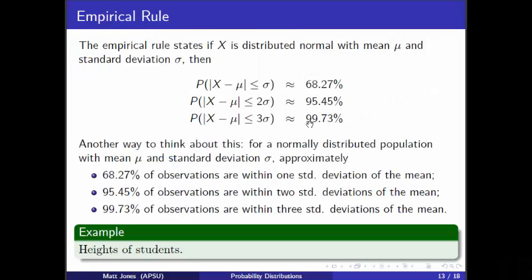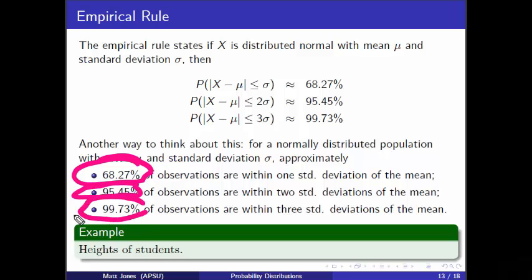If you've got a normal distribution, then about 68.27% of the observations are within one standard deviation. You go out two standard deviations either side of the mean and you collect about 95.45%, and going about three standard deviations out either side gets you almost all of it. This can tell you something about whether a data value might be considered extreme — another way to look at outliers. If something is two and a half, three or more standard deviations out, you might consider it an outlier.